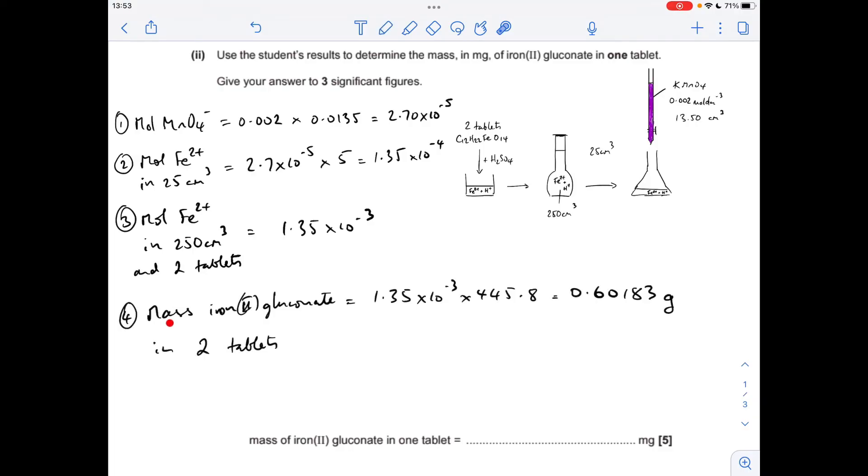So now we work out the mass of the iron 2 gluconate in the two tablets which is the moles times the MR so we get that many grams. We just half that to get the mass in one tablet. We're still in grams, we've got to put it into milligrams so we just multiply by a thousand and to three significant figures it's 301 milligrams.